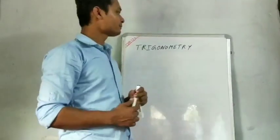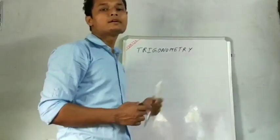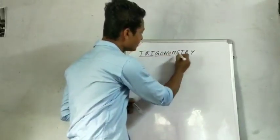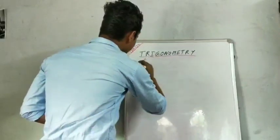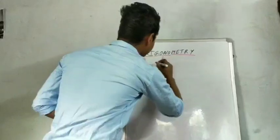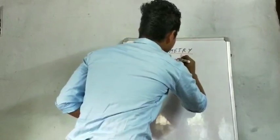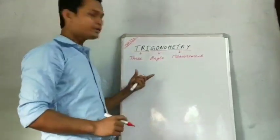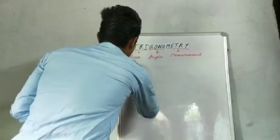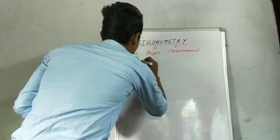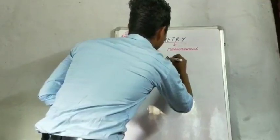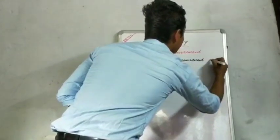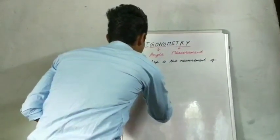Let's go through the meaning of Trigonometry. The term Trigonometry has come from the Greek word. Actually, the term Trigonometry is the combination of three words. Here, 'Tri' means three, 'Gono' means angle, and 'Metry' means measurement. Therefore, Trigonometry means the measurement of three angles.